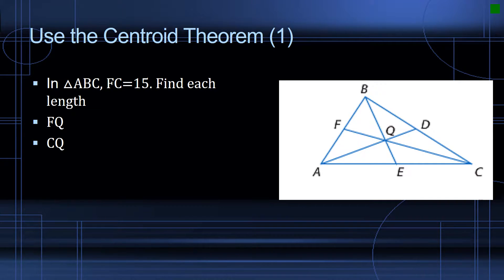One other property of the centroid: for any median, two-thirds of that length is from the endpoint of the vertex to the centroid, and then one-third is from the centroid to the midpoint on the line opposite that vertex.